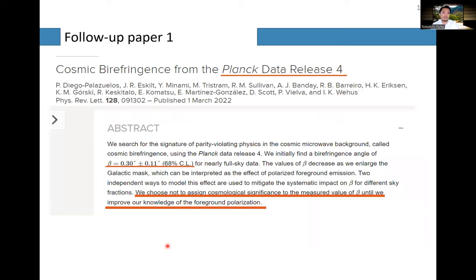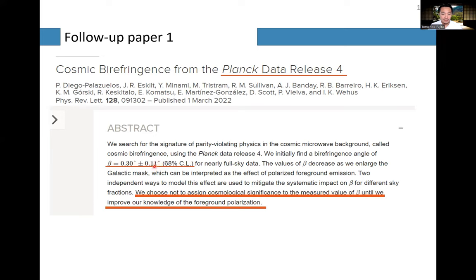Before proceeding, I should mention a couple of follow-up papers. The first follow-up was written by the Planck team, with Minami and Komatsu also in the author list. They carefully re-analyzed the Planck data and obtained a similar result: beta is 0.3 degrees ± 0.11 degrees for nearly full-sky data.